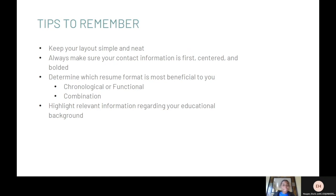And four: highlight any relevant information regarding your educational background. To go more in-depth on that, you do have your education listed, but you can also highlight any classes you've taken over the course of the years that might be relevant to what you're applying to. For example, as a senior in college, I highlight the classes I've taken over four years on my resume, so employers know what experience I have — even if I don't have field experience, I do have classroom experience.